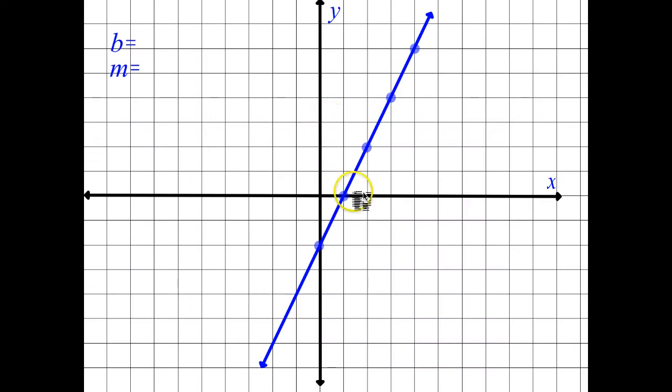First thing I want to do is let's take a look at a line here. I want to identify two different aspects of this line. First, I want to identify the y-intercept. The y-intercept is where the line crosses the y-axis. So here's the y-axis.